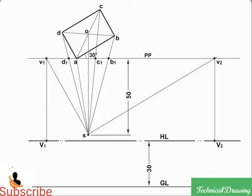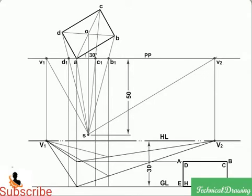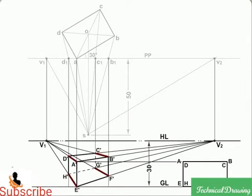Perspectives of edges AD, EH, BC and FG will converge to V1, and those of edges AB, CD, EF and GH will converge to V2. Perspectives of vertical edges AE, BF, CG and DH will remain vertical.